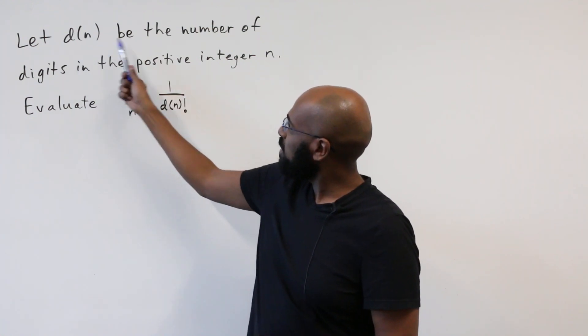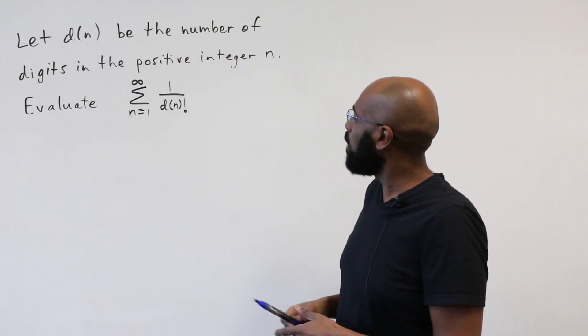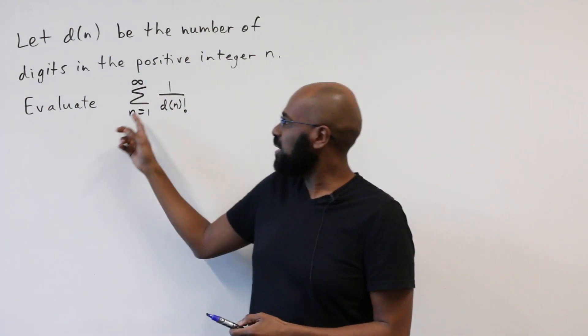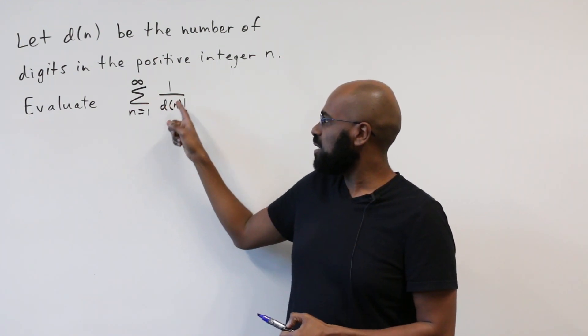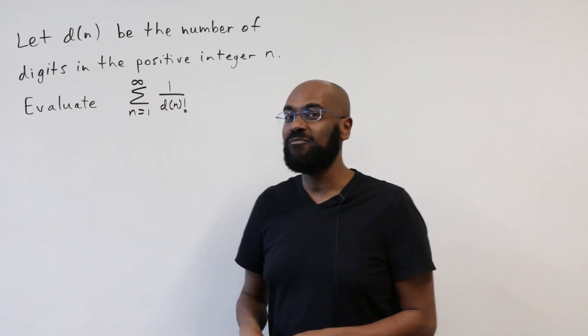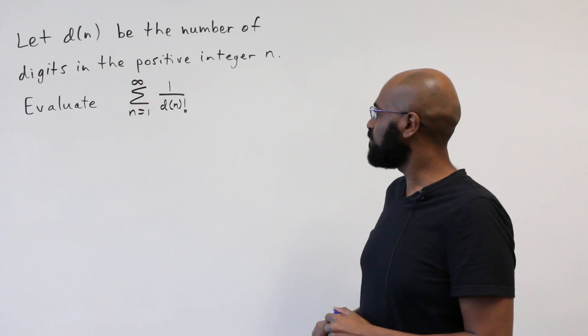So the question says, let d be the number of digits in the positive integer n, evaluate the sum n equals 1 to infinity of 1 over d factorial. Hmm, strange.